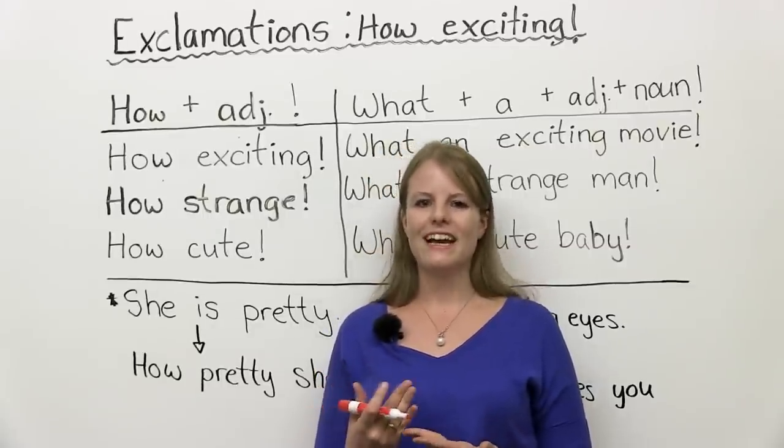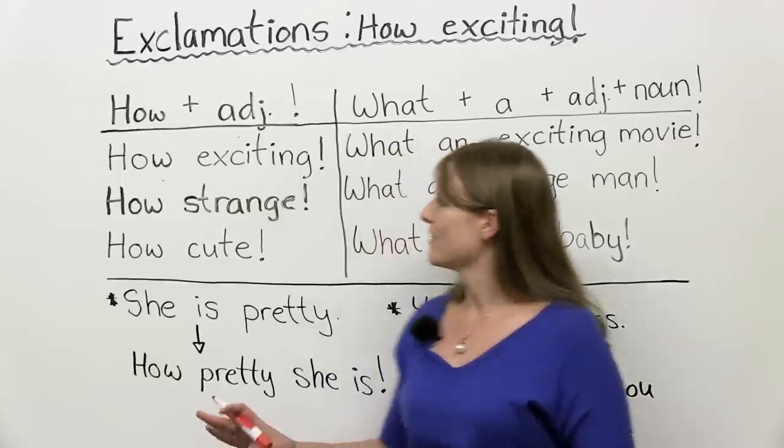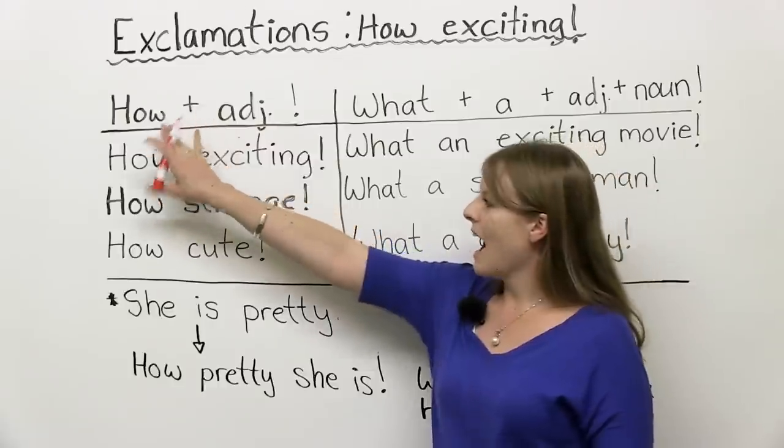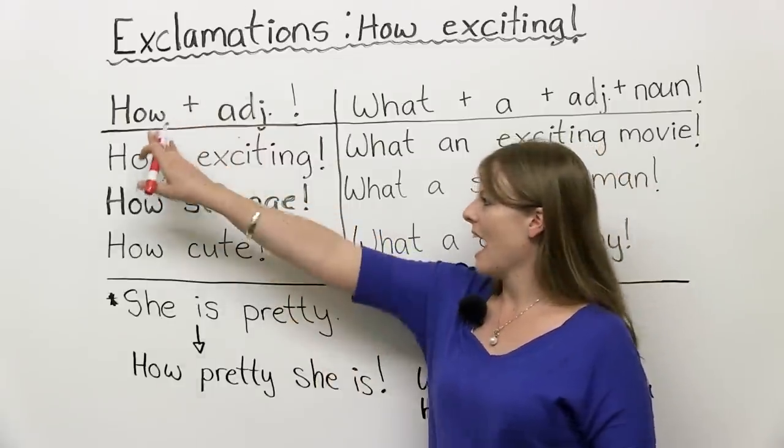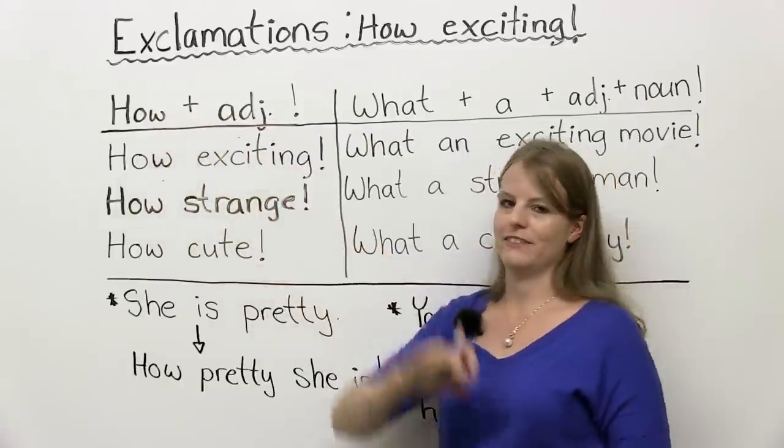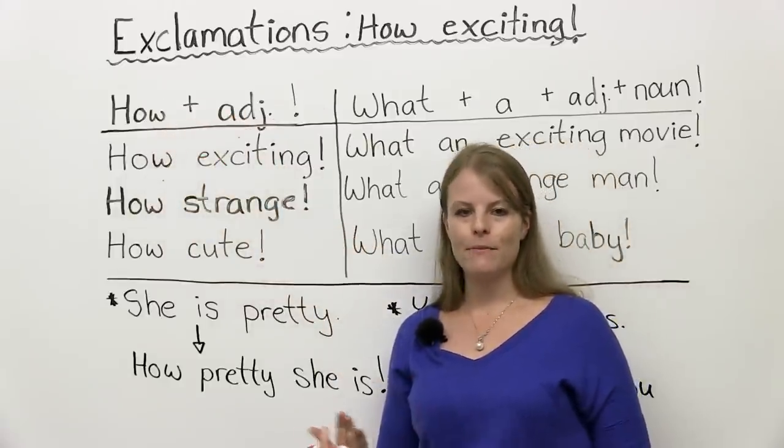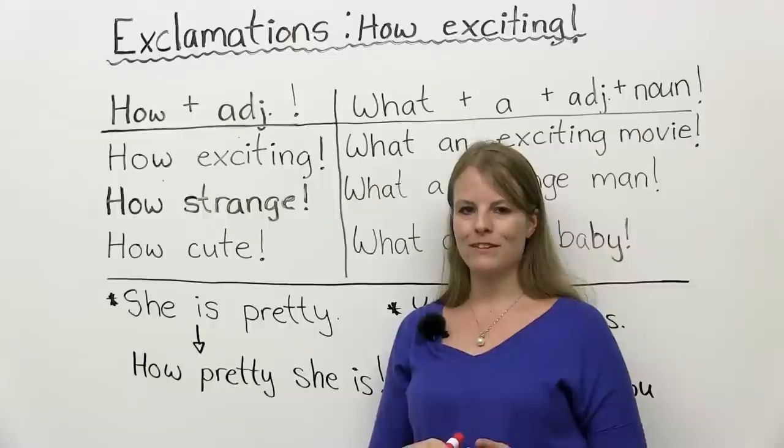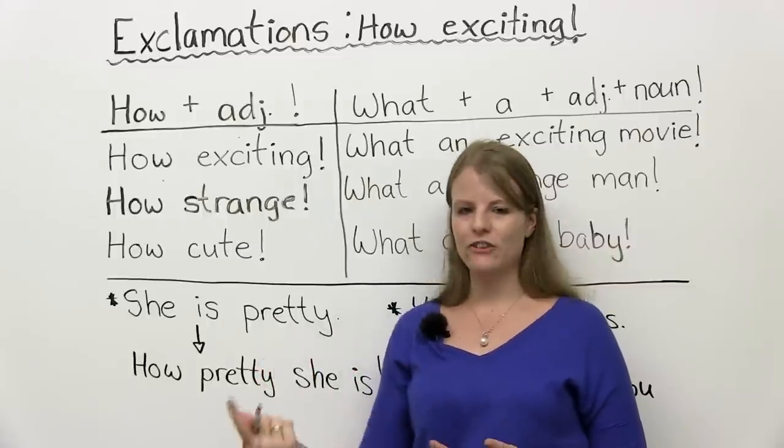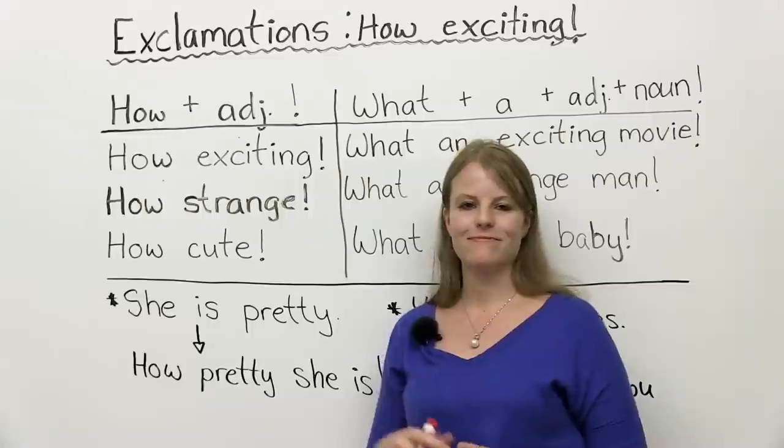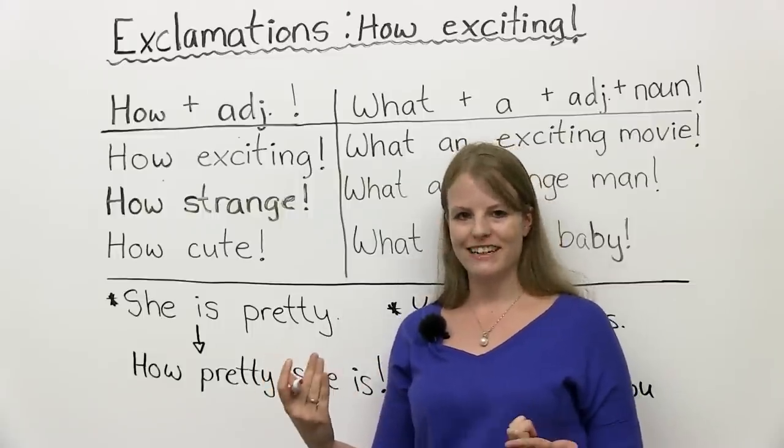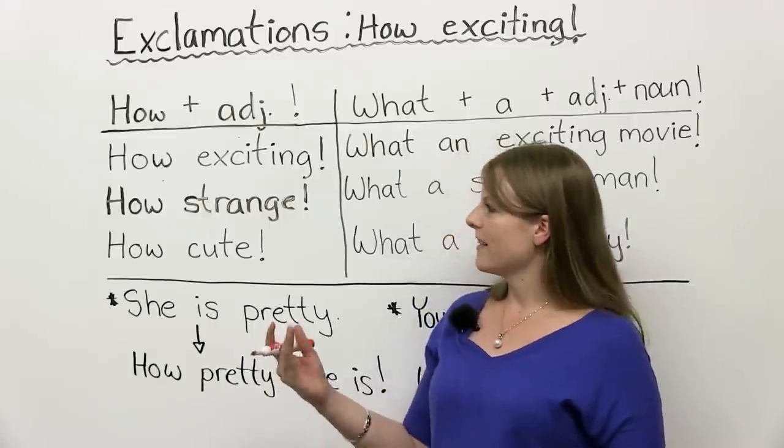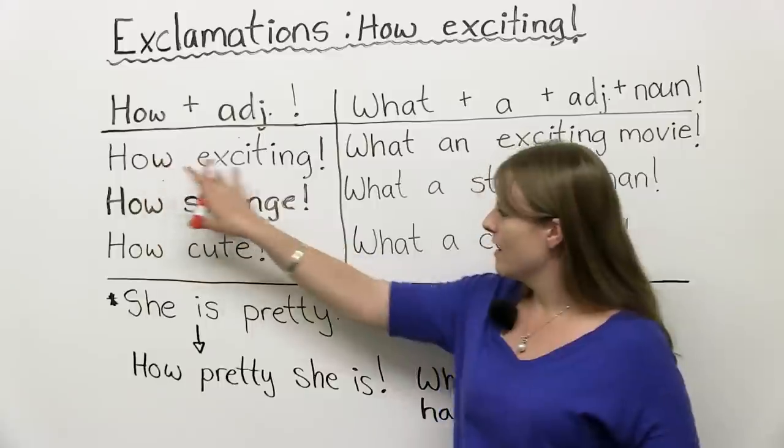So let's look at how do you make an exclamation? Okay. So first, we will look at how. We make a how exclamation by taking how plus an adjective. If you remember, an adjective is something that describes a noun. Example, exciting, interesting, big, small, medium, beautiful, pretty, cool. These are all adjectives. So for example, how exciting.